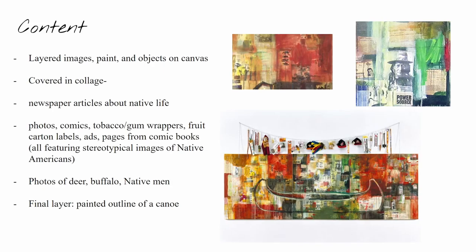So what's going on in this work? What are all these images of, and what's hanging above the canvas? Well, Trade consists of various layered images, paints, and objects. The work is covered in collage with newspaper articles about Native life, photos of deer, buffalo, Native men, and also comics, tobacco and gum wrappers, fruit carton labels, ads, and pages from comic books. All of these items were specifically selected by Smith and generally feature stereotypical images of Native Americans. The final layer of paint is an outline of a canoe.